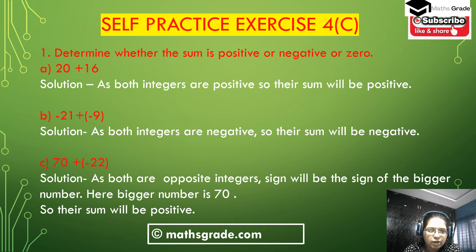(c) 70 plus minus 22. Both are opposite integers, so the sign will be the sign of the bigger number. The bigger number is 70, and 70 is greater than 22. The sign of the bigger number is positive, so their sum will be positive.